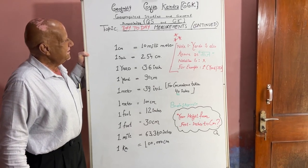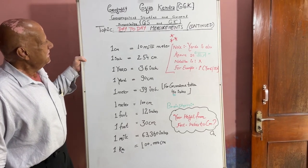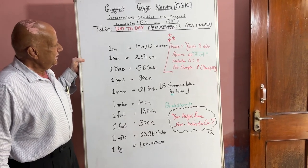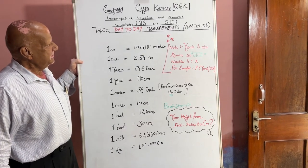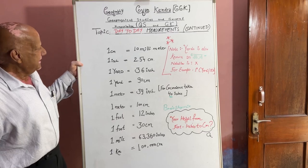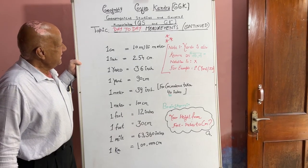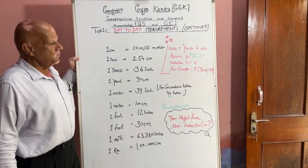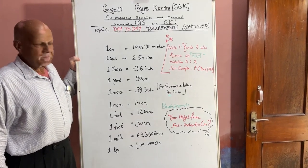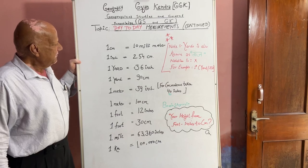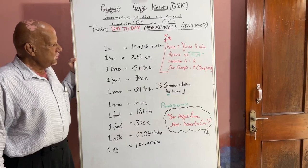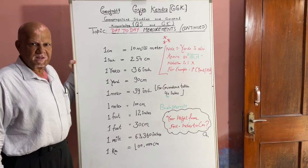4 measurements. 1 cm is equal to 10 mm. 1 inch is equal to 2.54 cm.